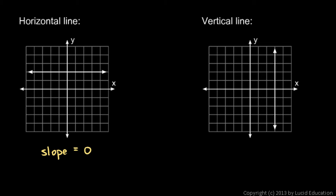And you can see why that has to be the case. You can pick any two points here. And if you think about the rise over the run, if you go from one point to another, there is no vertical change. The rise is zero.